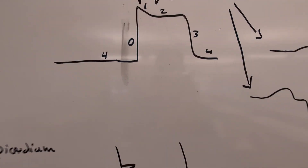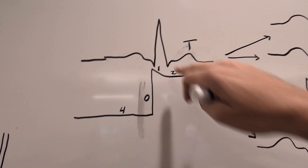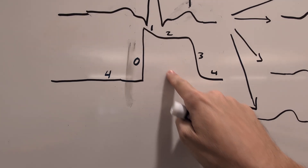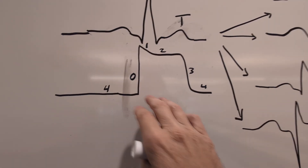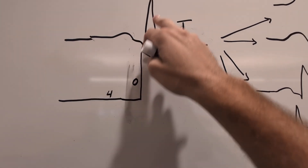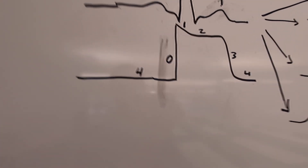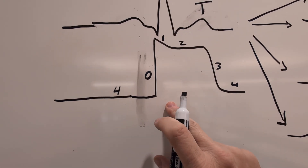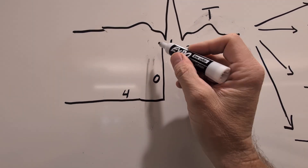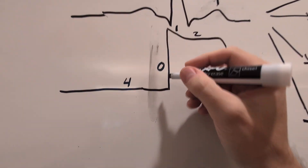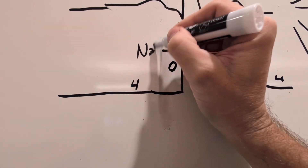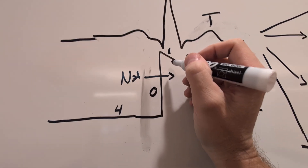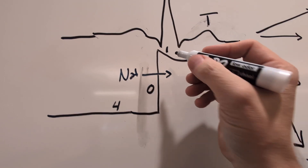One thing you need to understand is when we look at the PQRST complex, specifically talking about depolarization of the ventricles, we're going to take a look at the action potential. I'm going to superimpose that right underneath the QRS complex so we can appreciate what's going on. Phase four is resting potential, and then phase zero is a fast depolarization, occurring around the beginning of the QRS complex.